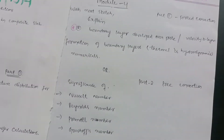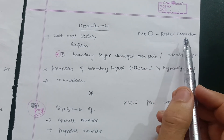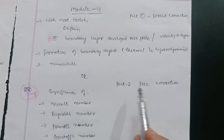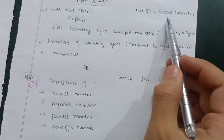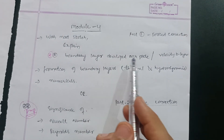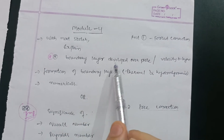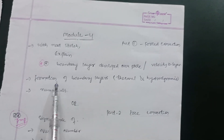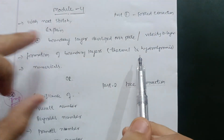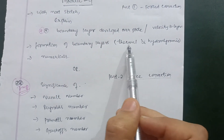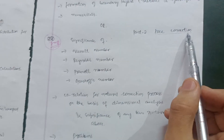Then go through Module 4, which covers forced convection and free convection. From personal experience, I recommend going for free convection as it is easier than forced convection. In forced convection, the important topic is boundary layers — the velocity boundary layer, thermal boundary layer, and hydrodynamic boundary layer developed over a plate. Study the formation of these boundary layers, as they will definitely ask about them, along with numericals.